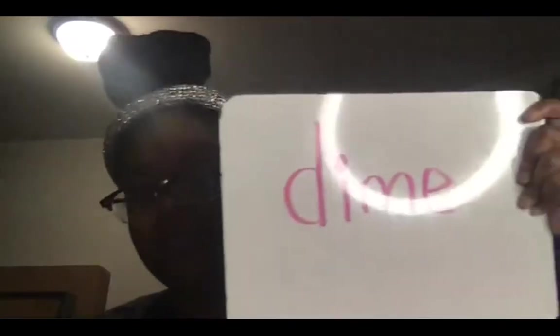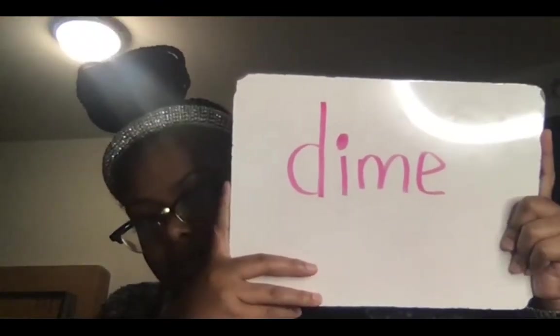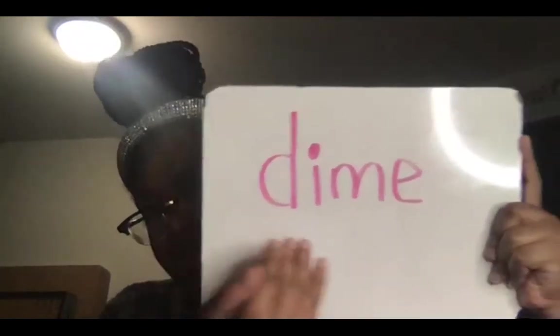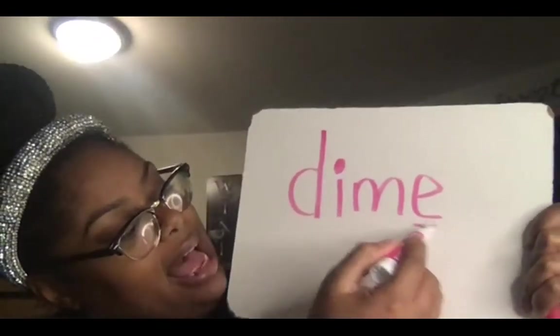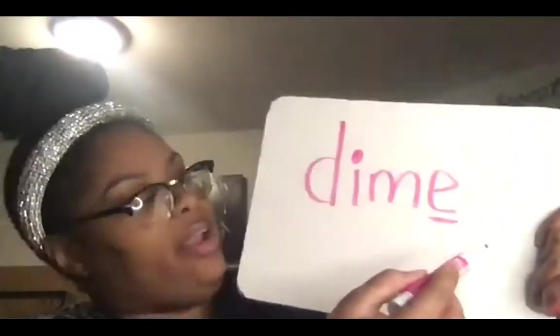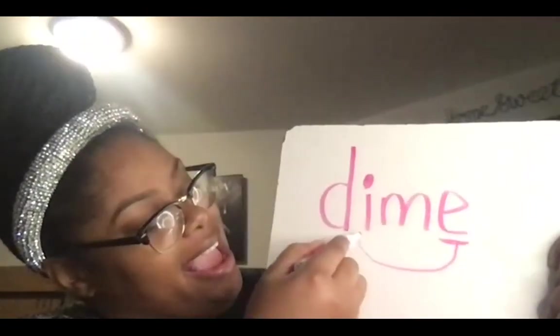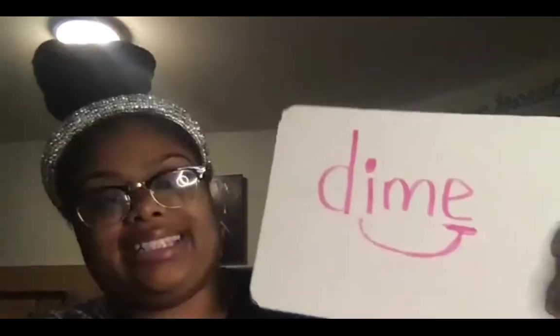So we're trying to figure out how many sounds the word dime has. This is the word dime — a dime, worth 10 cents. Dime has a silent E. This is the silent E. The silent E makes the vowel say its name.